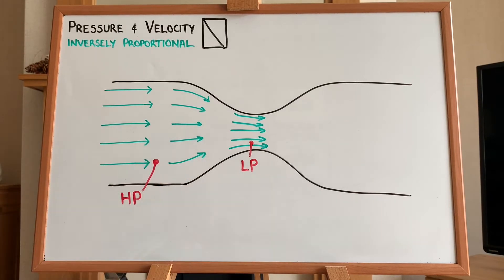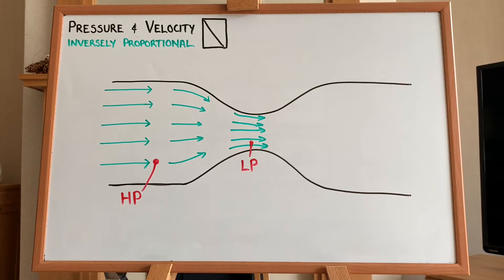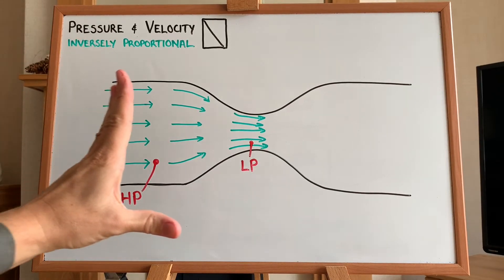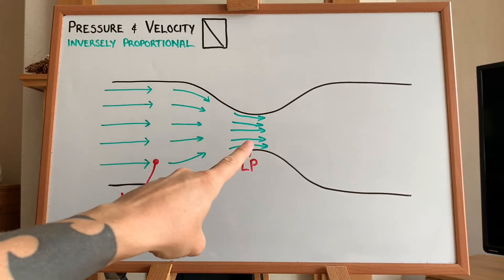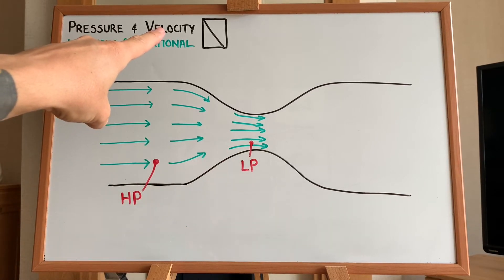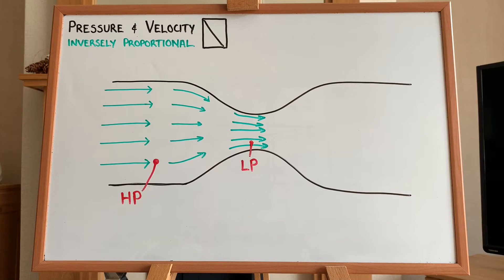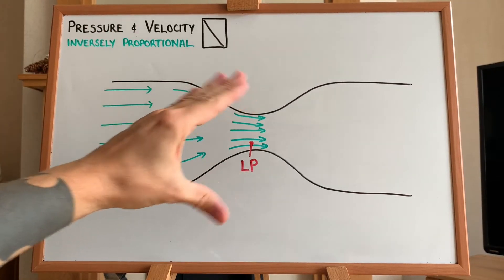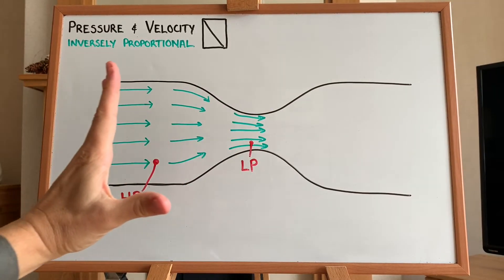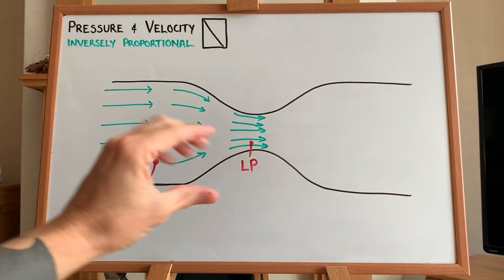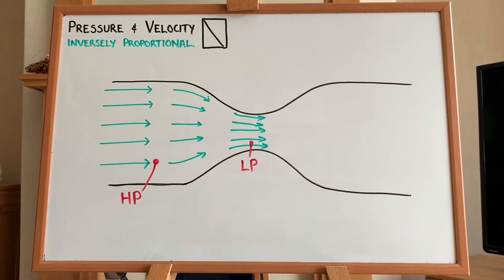An everyday example you may have seen is with a hose pipe. If you turn a hose pipe on you have water flowing out the end, but if you stick your thumb over the end, you'll notice it increases the velocity — the water comes out a lot faster. So what happens here is the flow of gas is at higher pressure than the faster-moving gas at the constriction, because as we increase velocity we decrease pressure — they are inversely proportional.